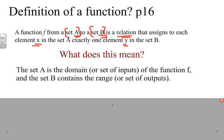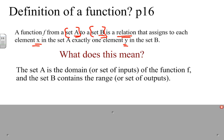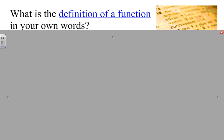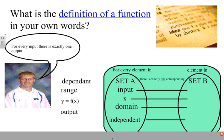In simpler terms, set A is the domain — the set of inputs of a function f — and set B contains the range, or set of outputs. In my own words: for every input, there is exactly one output. That's the key idea.